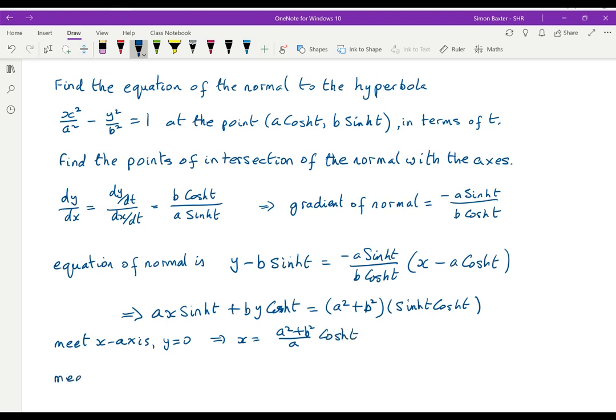And it's going to meet the y-axis when x is 0, and the same sort of thing, y is going to be equal to, dividing both sides by b, that's (a² + b²)/b, and the cosh t's cancel sinh t.